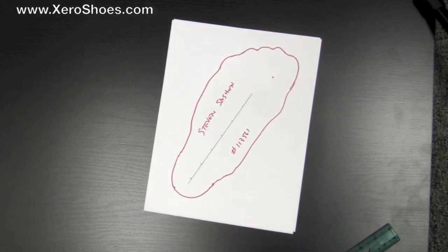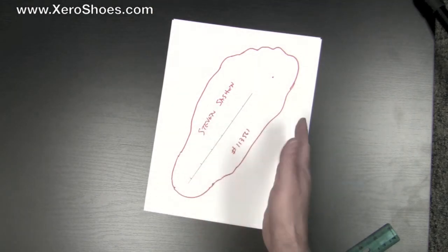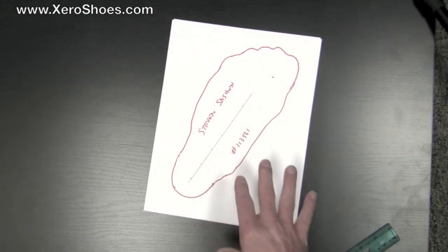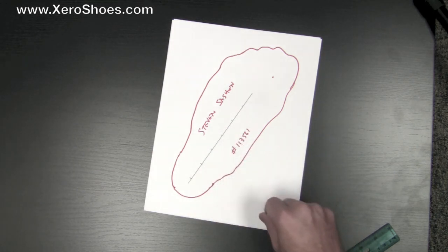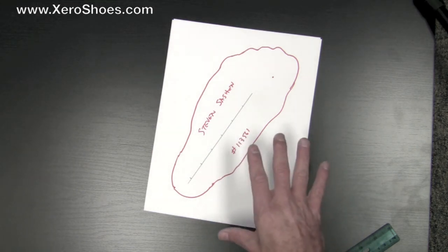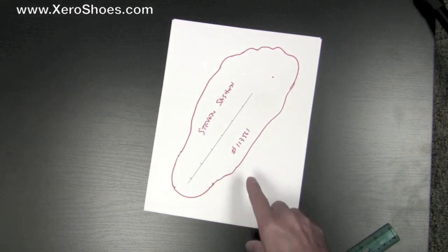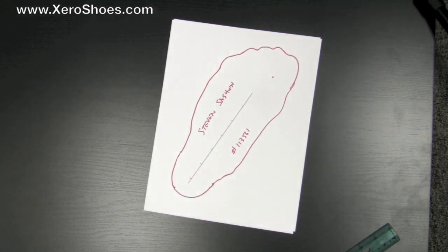The last thing you want to do is flip this over and put your other foot on the tracing and see if it lines up. It doesn't have to be perfect, but if it's pretty close, we'll use this tracing for both of your feet. If your feet are dramatically different sizes or shapes, make a second tracing, do all the same things with that, and send them both to us.